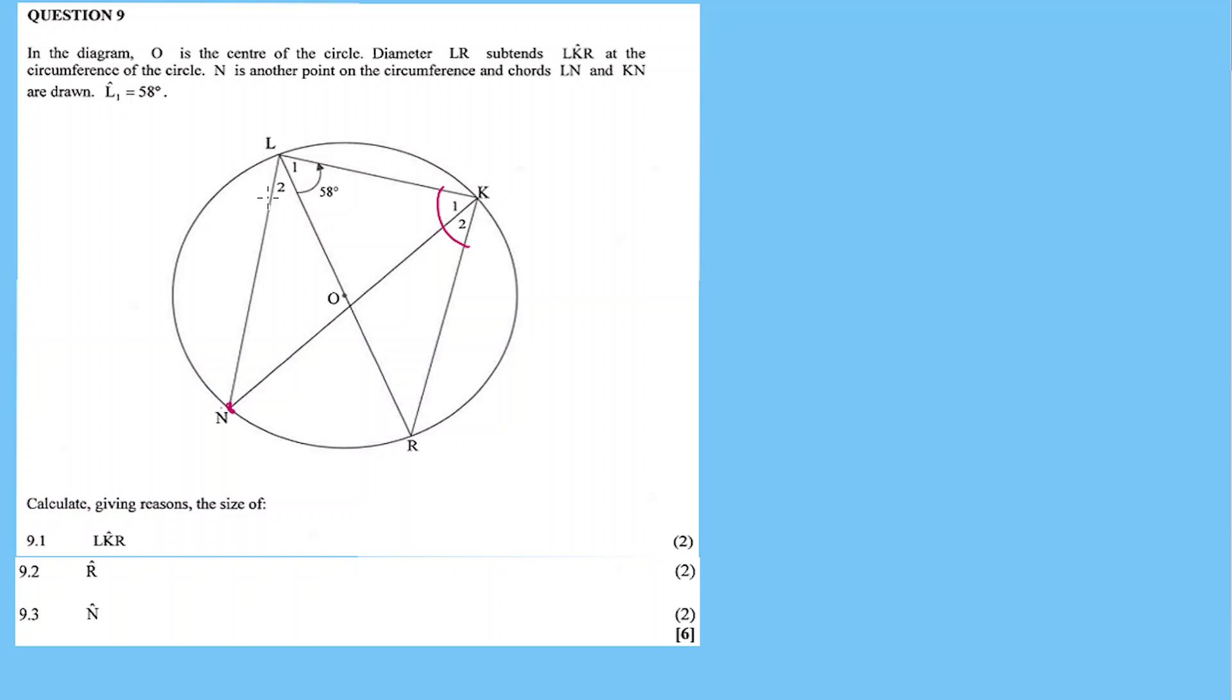LN and KN are drawn, and L1 is equal to 58 degrees. Calculate, giving reasons, the following angles. 9.1, find angle LKR,